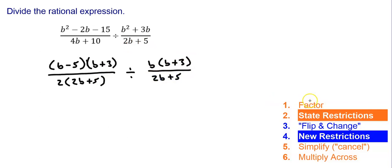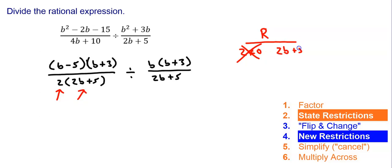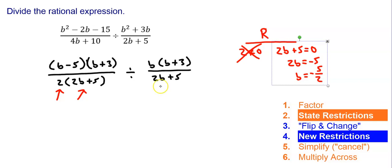Step two, just like when we multiplied, we find the restrictions. I have a 2 — 2 equals zero doesn't make sense, so I don't need it. I have 2b plus 5 equals zero. Subtract 5, so 2b equals negative 5, divide by 2, giving b equals negative five-halves. I also have another 2b plus 5, already covered. So far my only restriction is b equals negative five-halves.